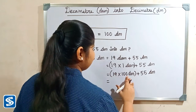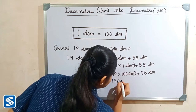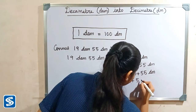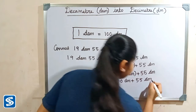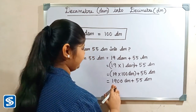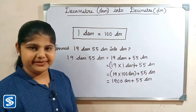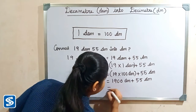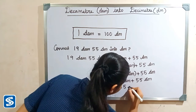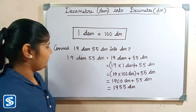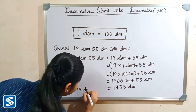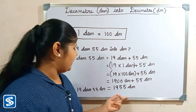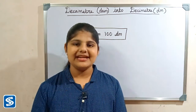19 multiplied by 100 gives 1900 decimeters, plus 55 decimeters. When we add 1900 decimeters and 55 decimeters our answer will be 1955 decimeters. So 19 decameters 55 decimeters is equal to 1955 decimeters.